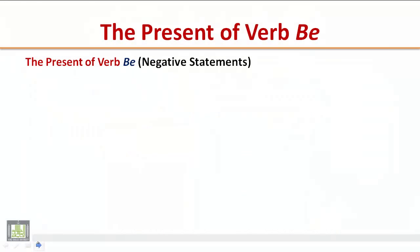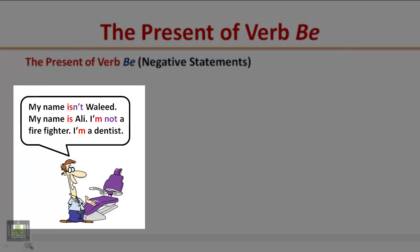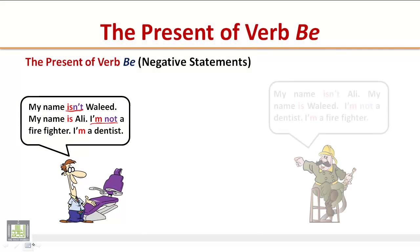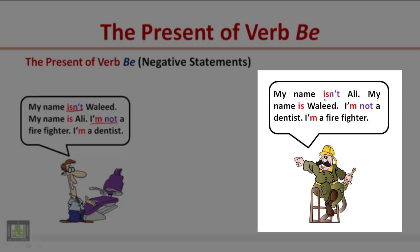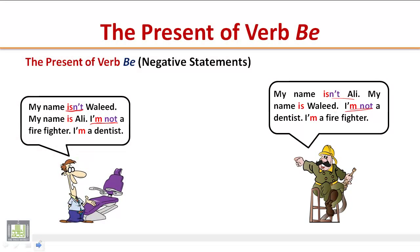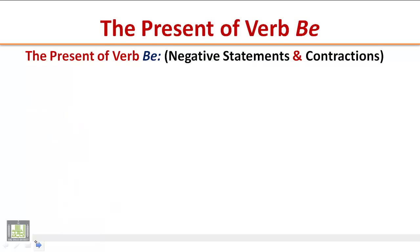The present of verb be: negative statements. Listen to the following short conversation and pay attention to the negative form of verb be. My name isn't Waleed, my name is Ali. I'm not a firefighter, I'm a dentist. My name isn't Ali, my name is Waleed. I'm not a dentist, I'm a firefighter.